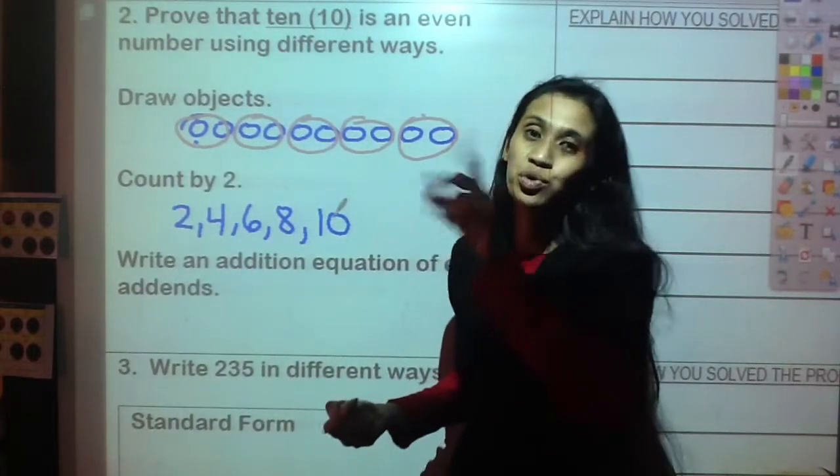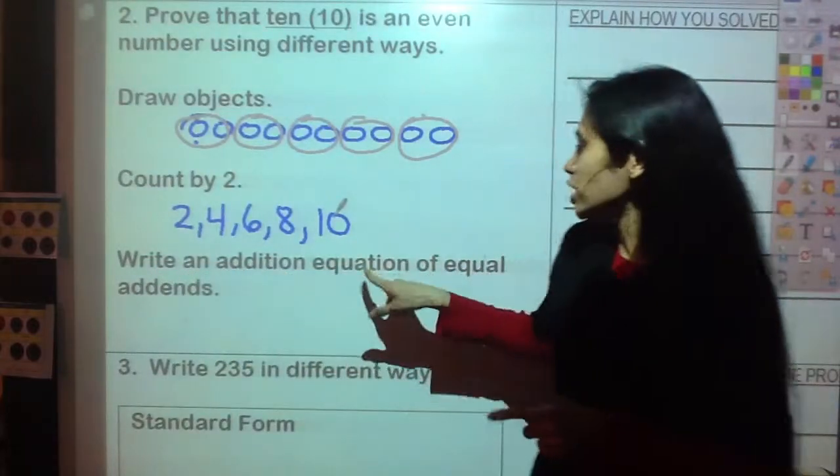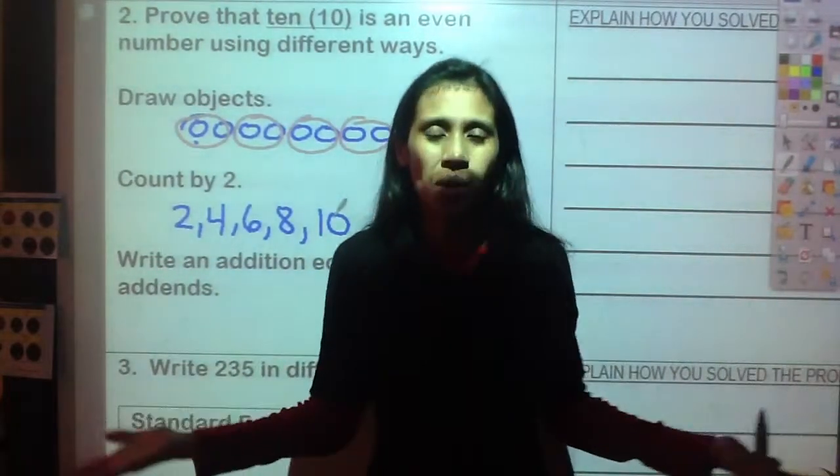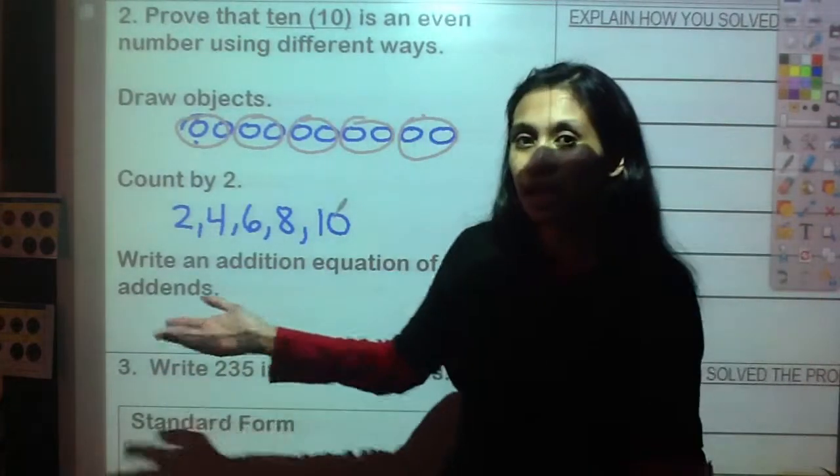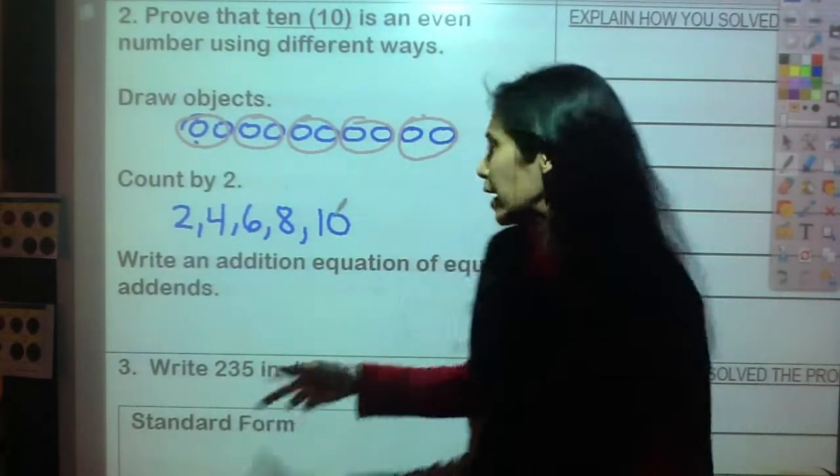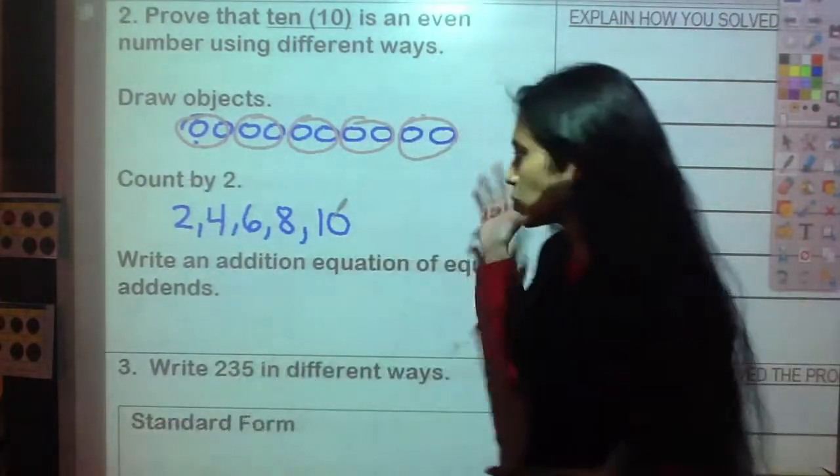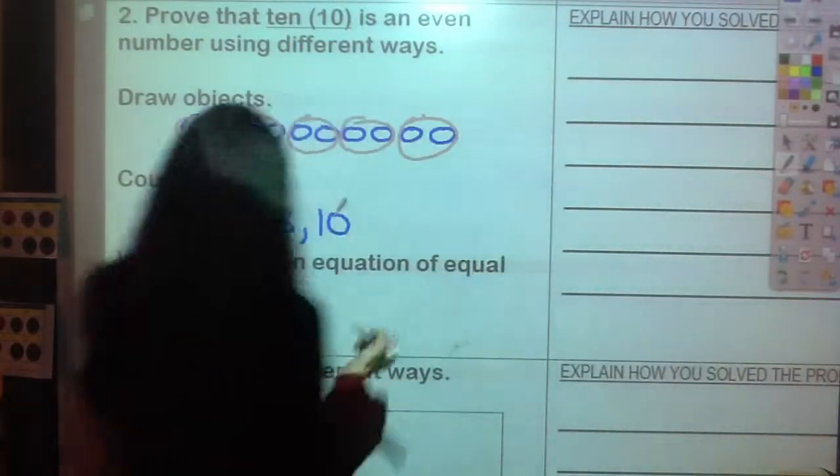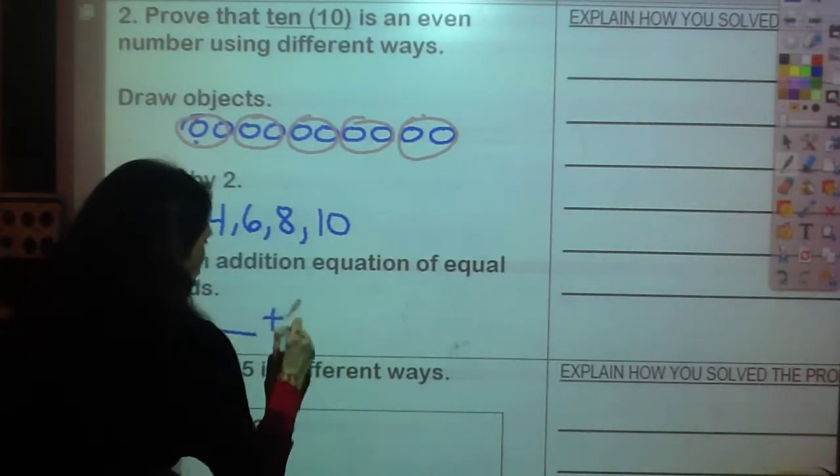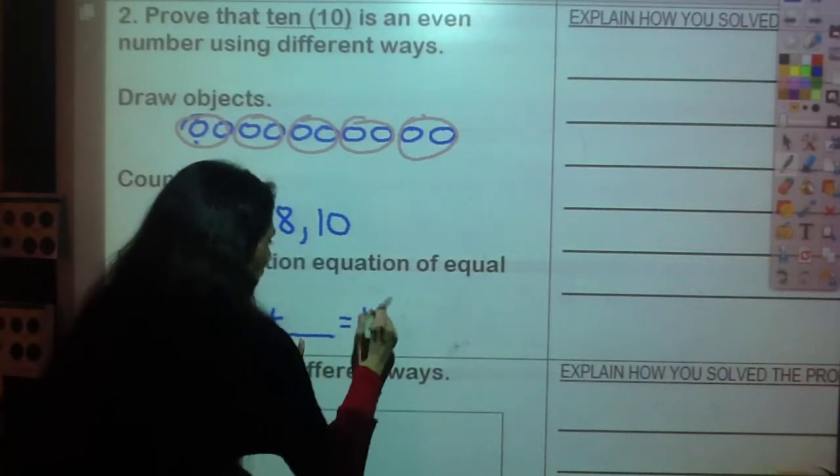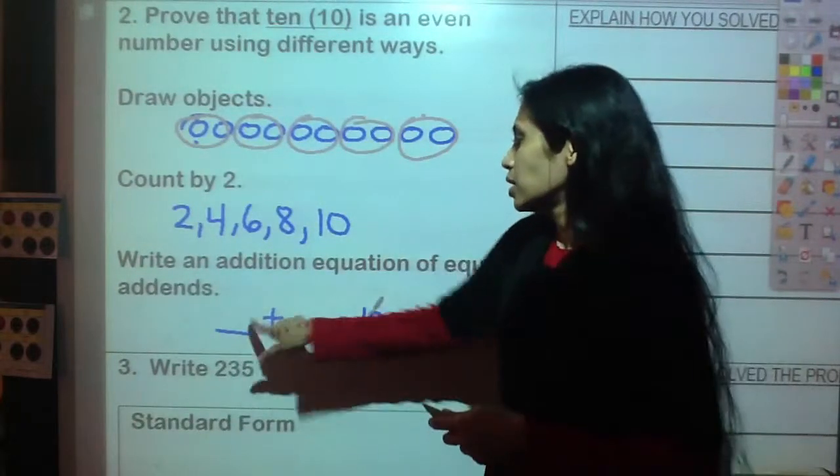Guess what? There's a third way to prove if these numbers are even: write an addition equation of equal addends. That means we need to write an addition sentence, and the addends, that means the numbers you add, have to be equal. I'm going to put a blank right here, plus a blank right here, equals ten.